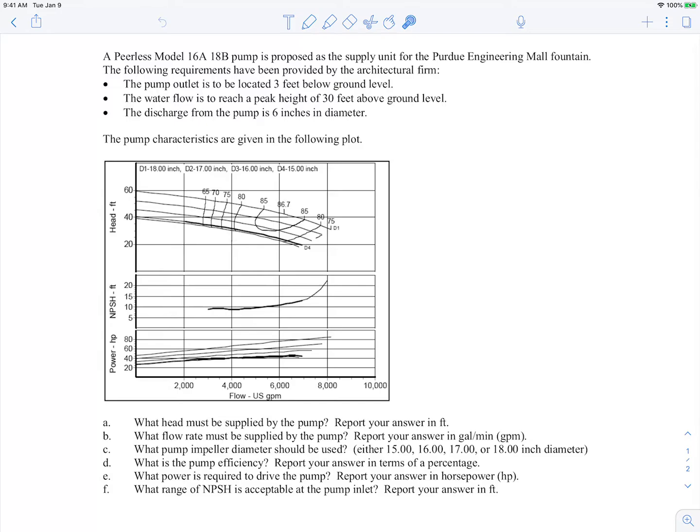We're given some information about the fountain. First, the pump outlet is going to be three feet below ground level, and the water flow is to reach a peak height of 30 feet above ground level. So we want the fountain of water to go all the way up to 30 feet. We're also told the discharge from the pump is six inches in diameter, and we're given some information about the pump performance.